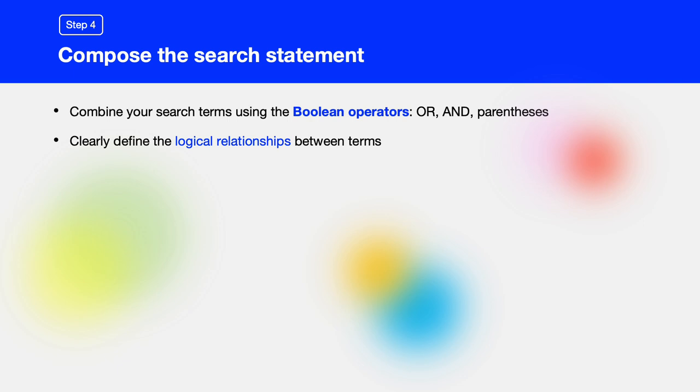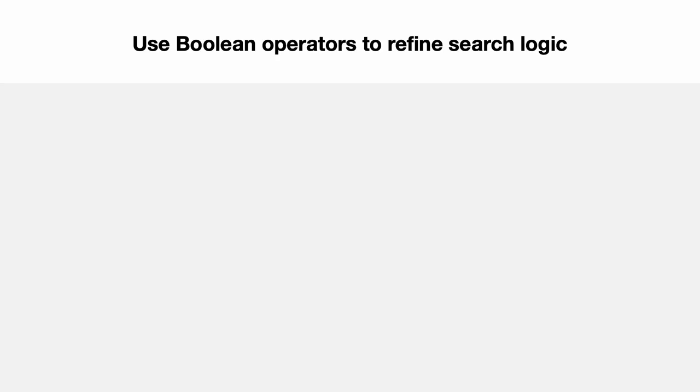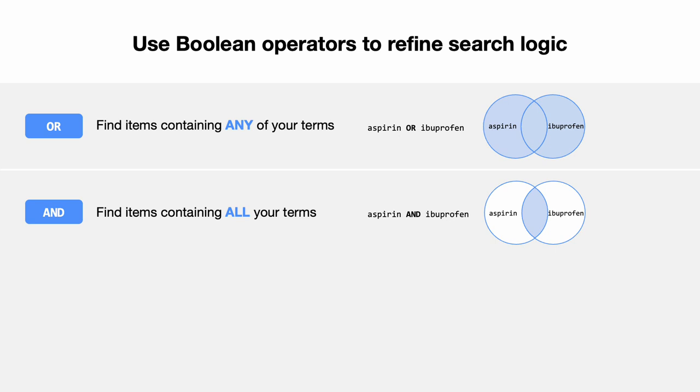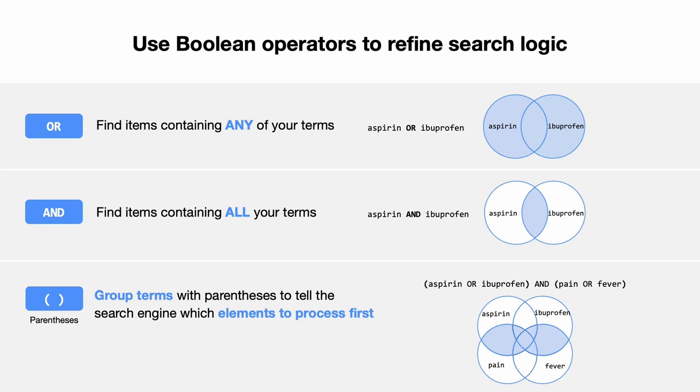In step four, compose your search statement to guide the search engine effectively. Combine your search terms using the Boolean operators OR, AND, and parentheses to clearly define the logical relationships between them. Using OR expands your search to find items containing any of the terms you're looking for — for example, aspirin OR ibuprofen will return results that include either drug or both. The AND operator narrows your search to find items containing all your specified terms — aspirin AND ibuprofen will return results that include both drugs together. Group search terms with parentheses to tell the search engine which elements to process first, allowing you to create more complex, targeted searches by nesting one search within another.